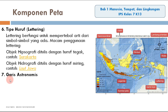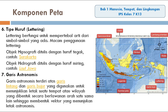Yang ketujuh, garis astronomis. Garis astronomis terdiri atas garis lintang dan garis bujur yang digunakan untuk menunjukkan letak suatu tempat atau wilayah, yang dibentuk secara berlawanan arah satu sama lain sehingga membentuk vektor yang menunjukkan letak astronomis. Ini merupakan garis koordinat atau garis astronomis.